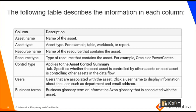The following describes the information of each column under those three tabs. Asset name tells you the name of the asset. Asset type gives you the type of the asset. Resource name gives you the name of the resource, and resource type gives you the type of the resource that contains this asset. Control type applies to the asset control summary and specifies whether the seed asset is controlled by other assets or the seed asset is controlling other assets in the data flow.